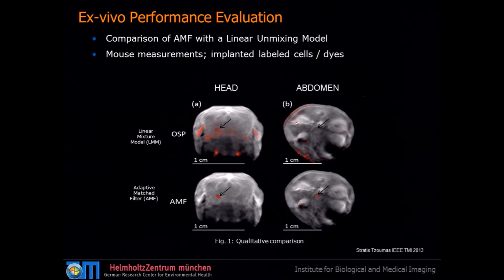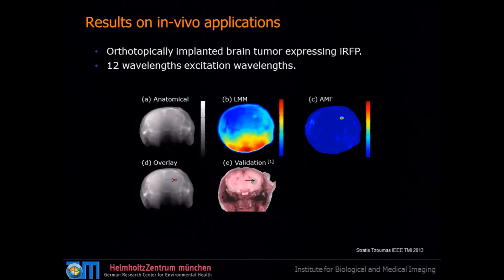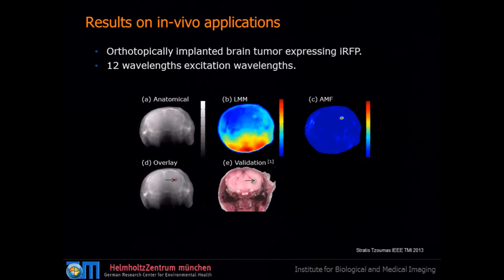In the abdomen, we can't even see the small injected dye with linear unmixing, but with the adaptive matching filter we can nicely resolve it. In vivo images from orthotopically implanted brain tumors expressing IRFP show that linear unmixing gives something but with a lot of noise, whereas our most advanced algorithm gives very clean spectral unmixing on the image, matching the cryoslice gold standard. That is how we drive high sensitivity in MSOT and optoacoustics.